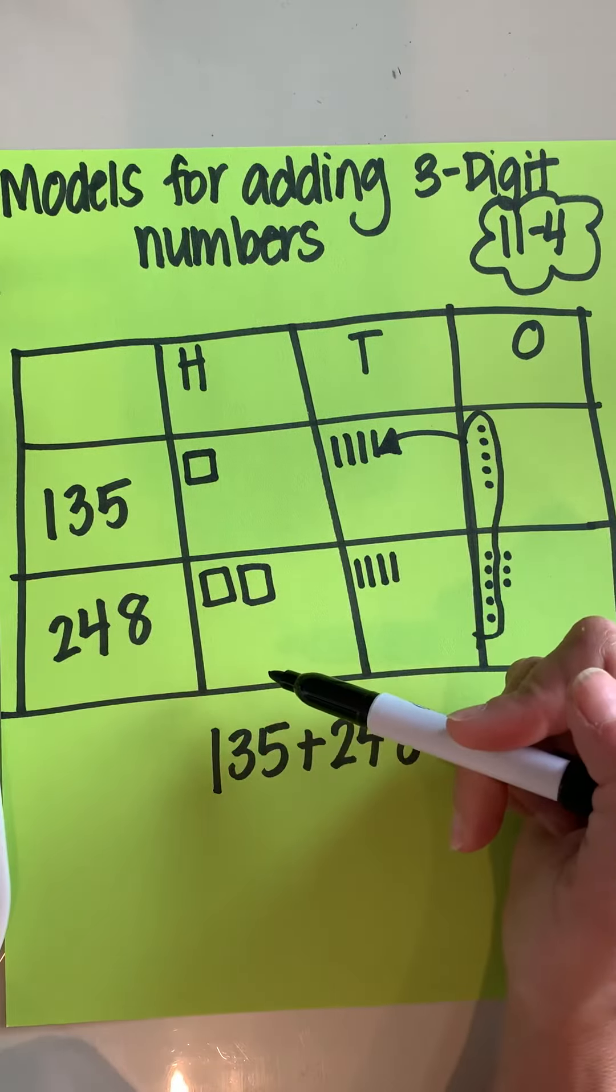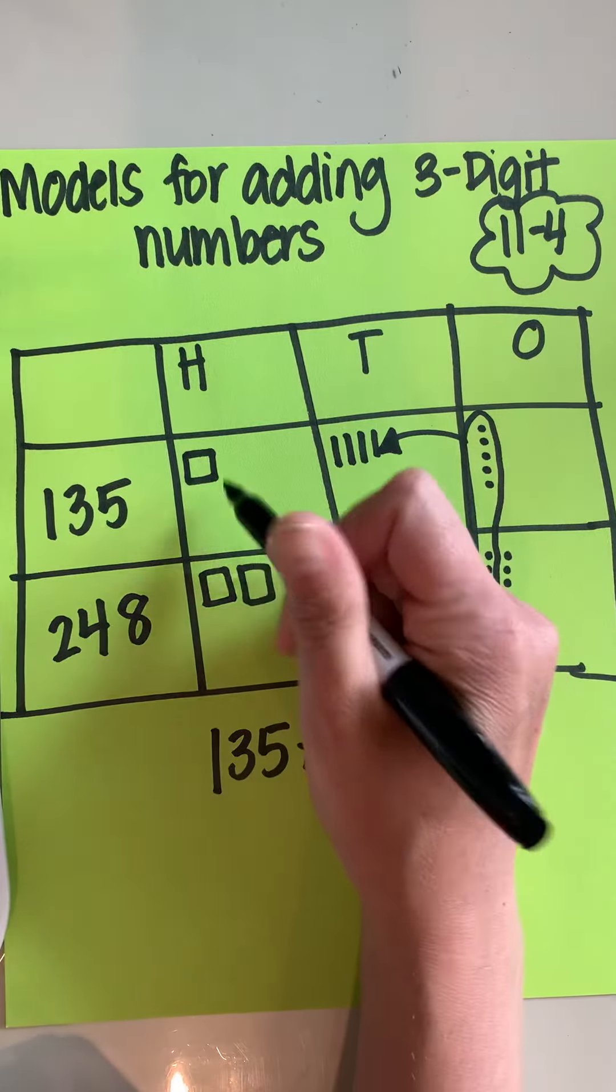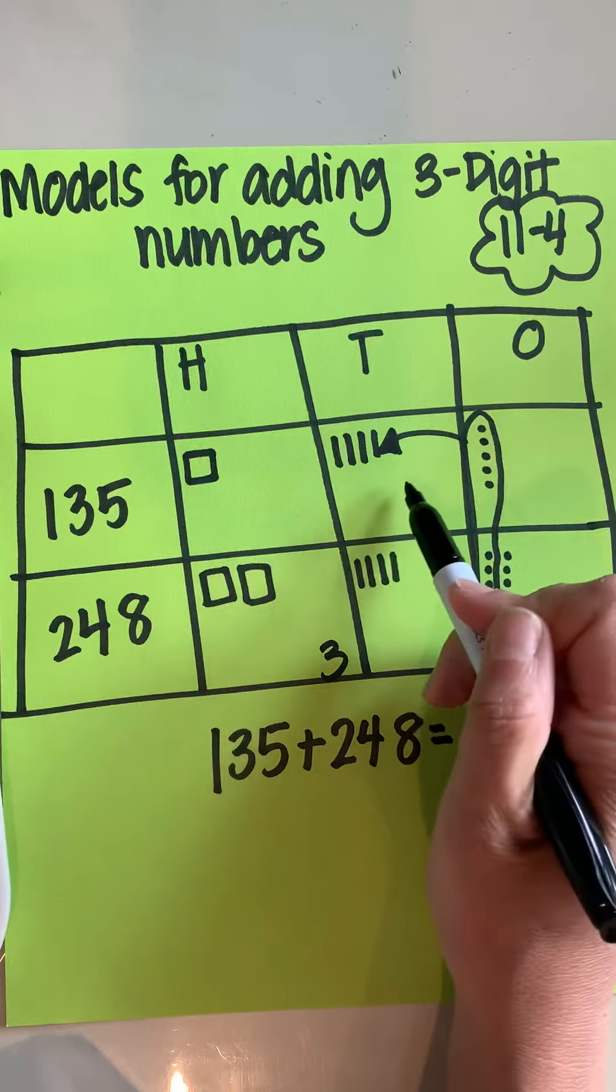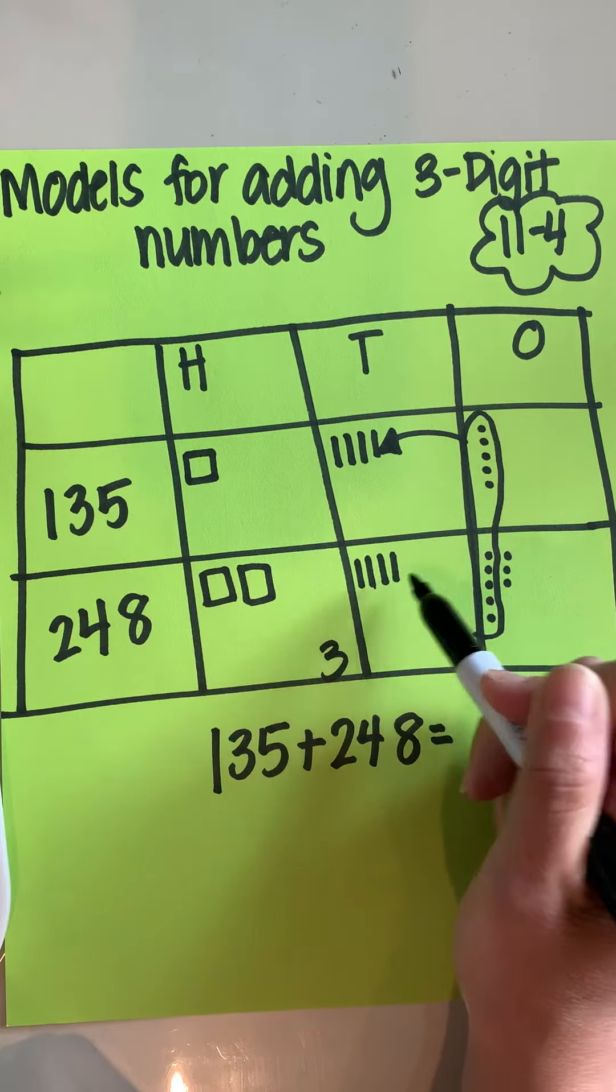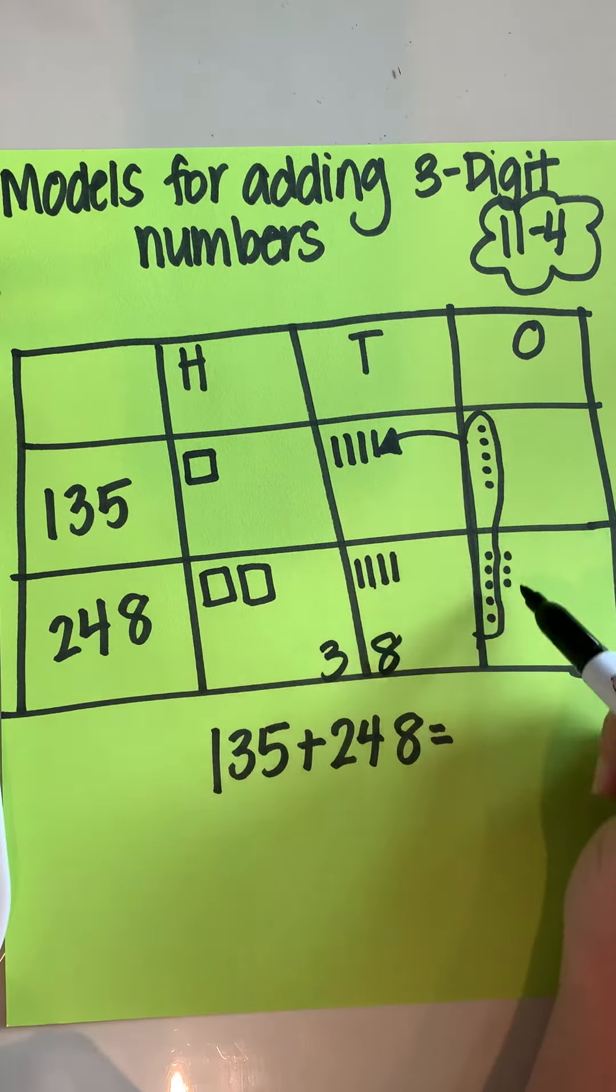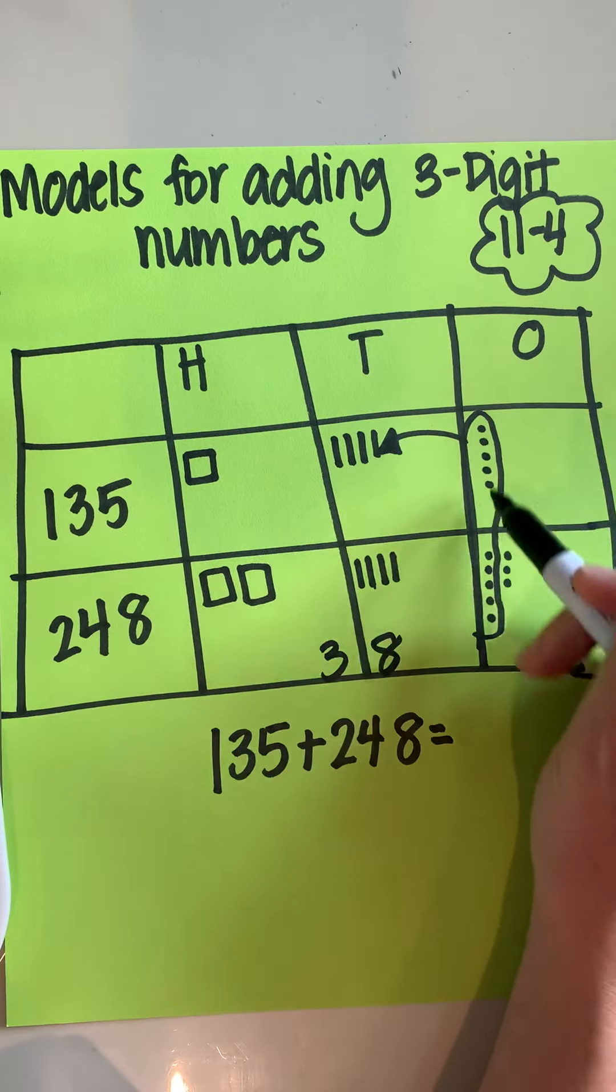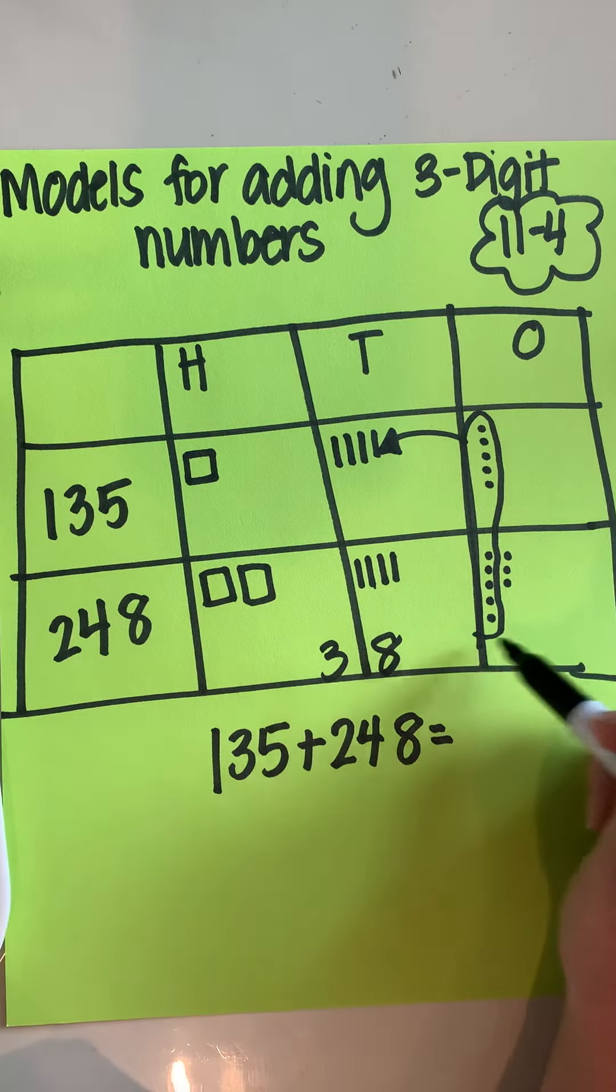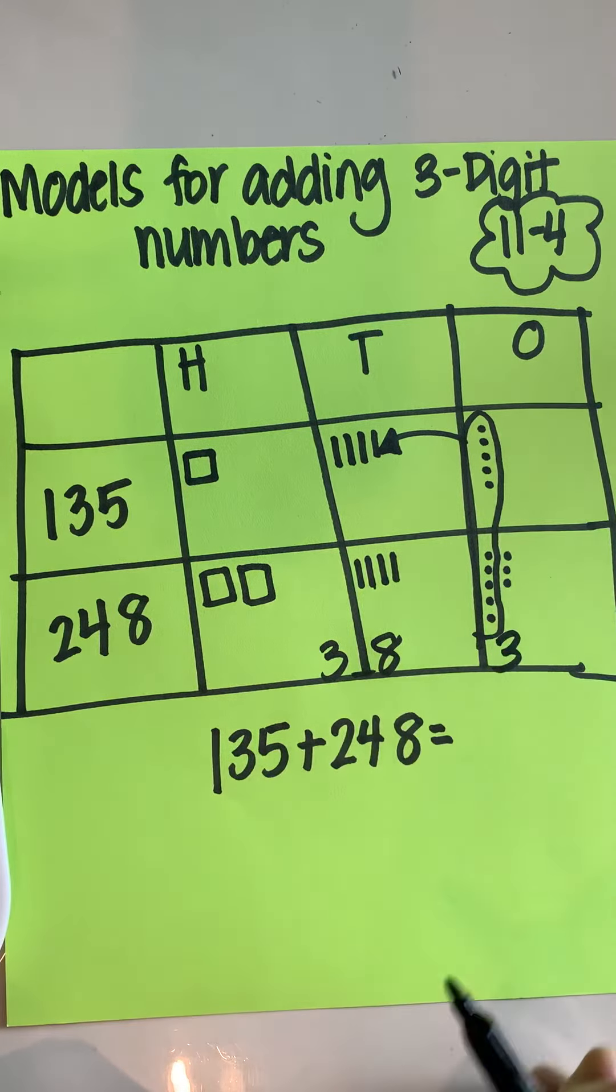So after I count all these down here, I have one, two, three hundreds. And then after I regrouped, I have one, two, three, four, five, six, seven, eight tens, and only three ones left over. I'm not going to count this one because I already turned it into my 10 ones into one 10. So my answer is 383.